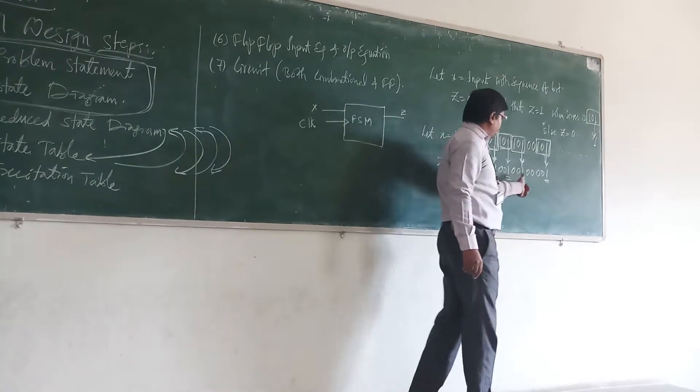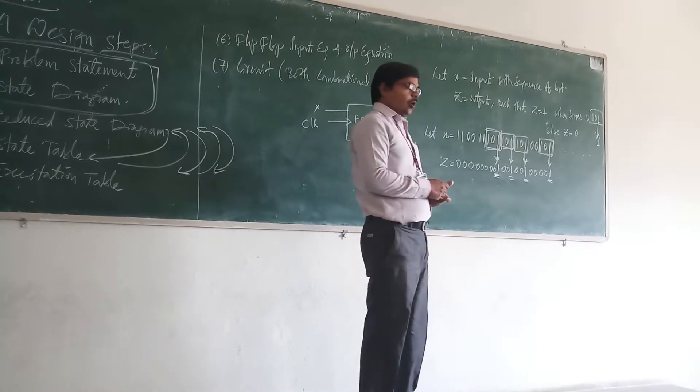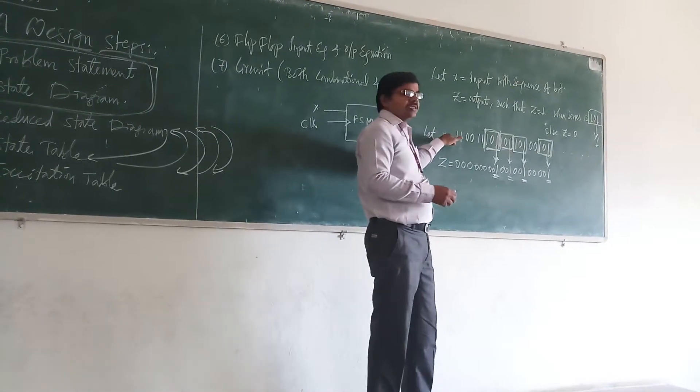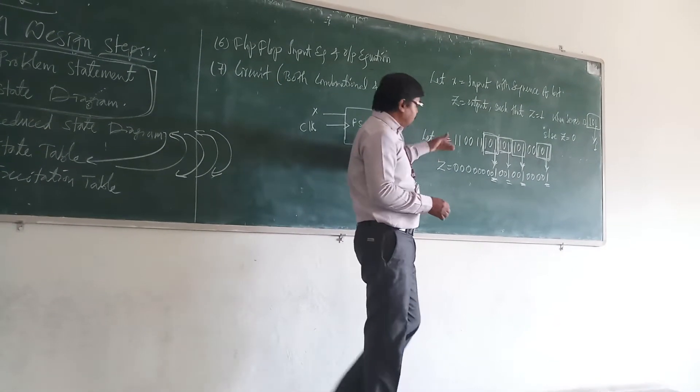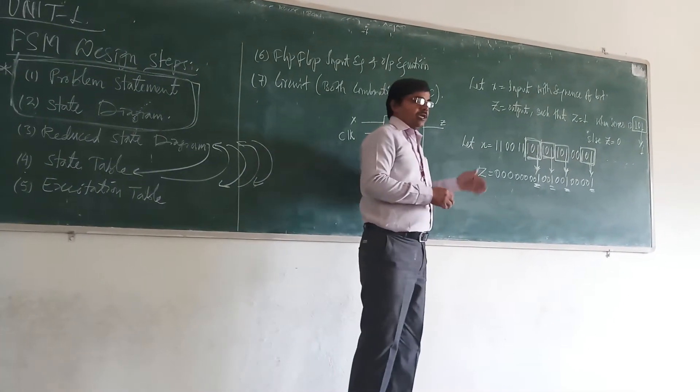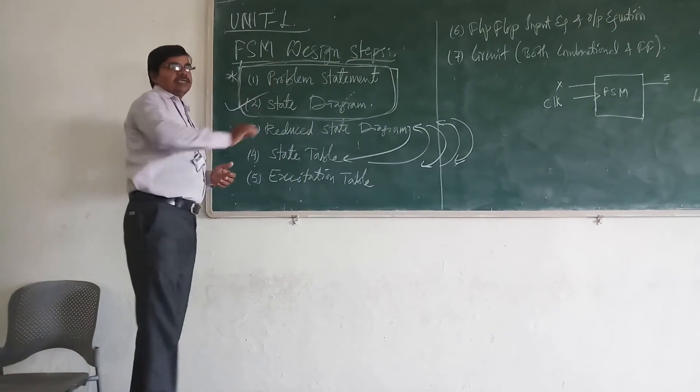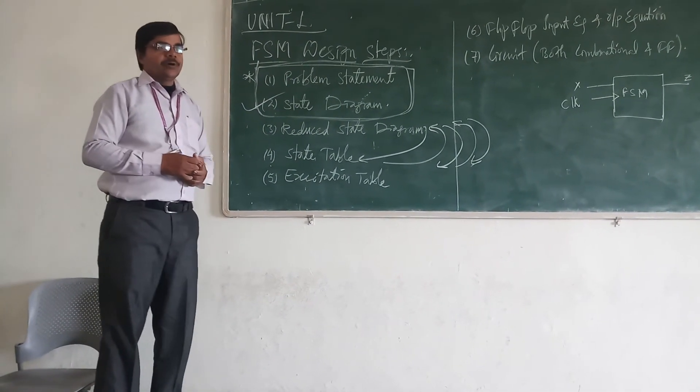So you have 1, 1, 1, 1, 1, remaining to be 0. So this is your output for this input. This is your problem statement, so for this problem statement we need to go for designing the state diagram.